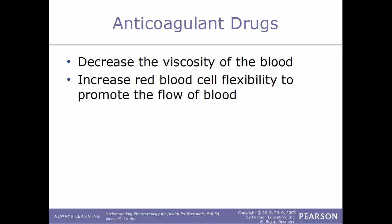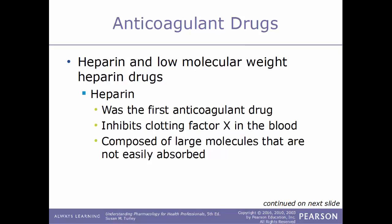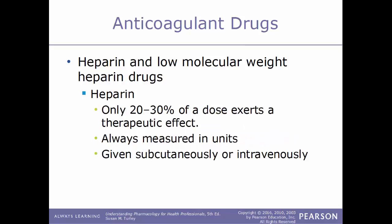Anticoagulants also act to decrease the viscosity of the blood and increase the flexibility of red blood cells to help promote blood flow. The first type of anticoagulant drug is heparin and low molecular weight heparin drugs. Heparin was the very first anticoagulant drug developed. It works by inhibiting clotting factor number 10 in the blood. This drug is composed of large molecules that are not easily absorbed, and only 20 to 30 percent of a dose actually exerts a therapeutic effect.